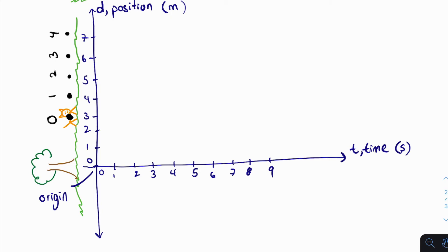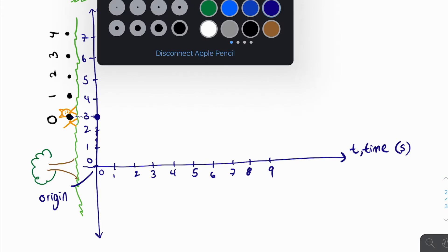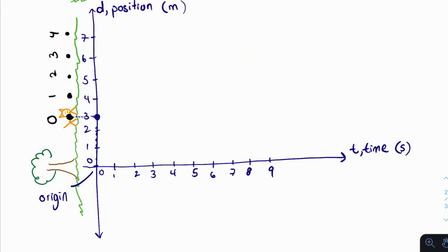So at time 0, the cheetah is 3 meters to the right times 0, so we're going to put a point there. At time 1, the cheetah is 4 meters away from the tree to the right, so we have a new point.